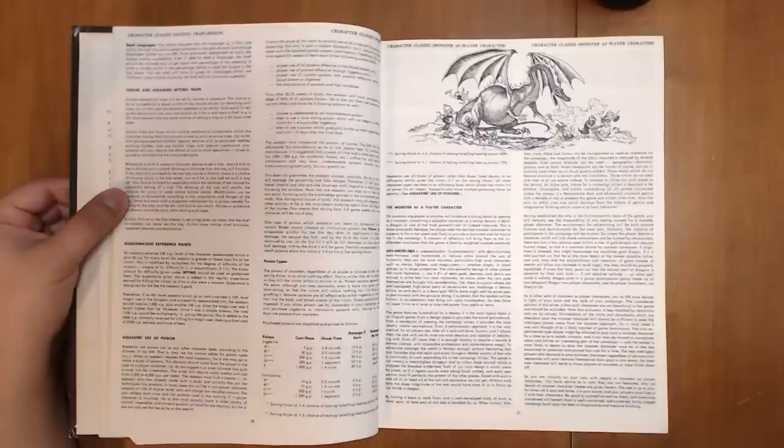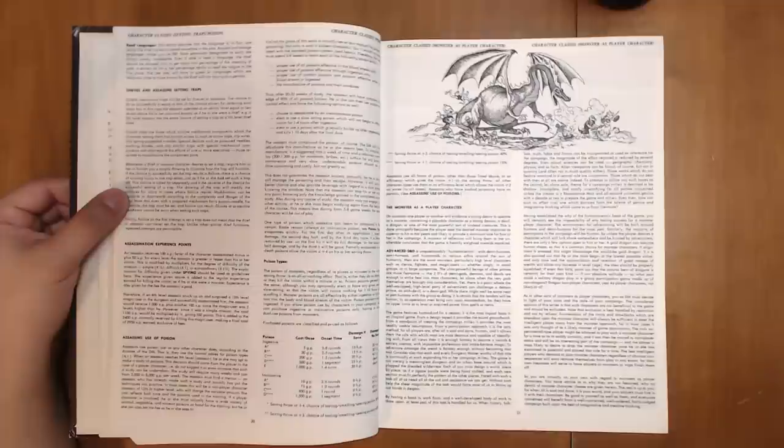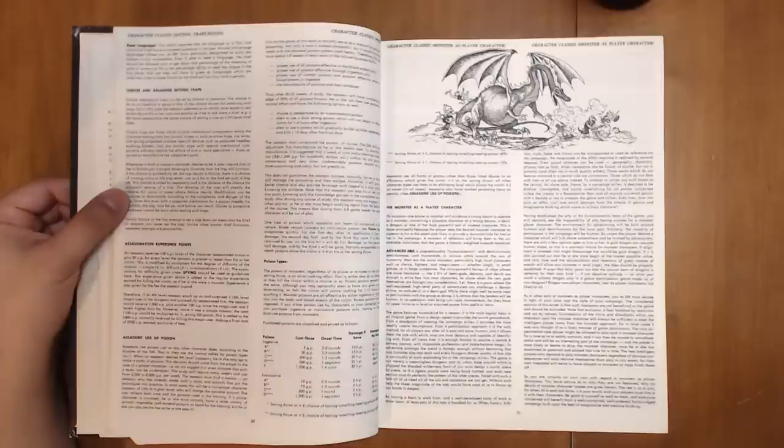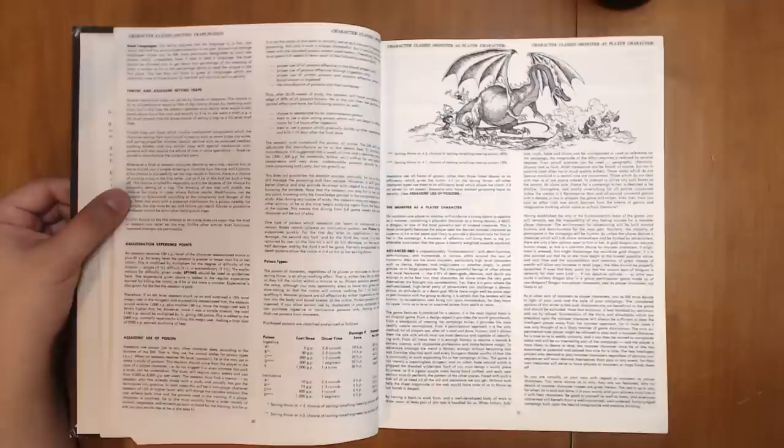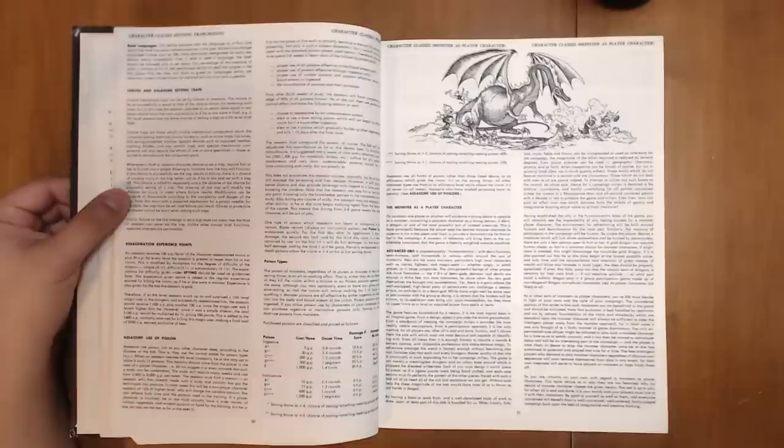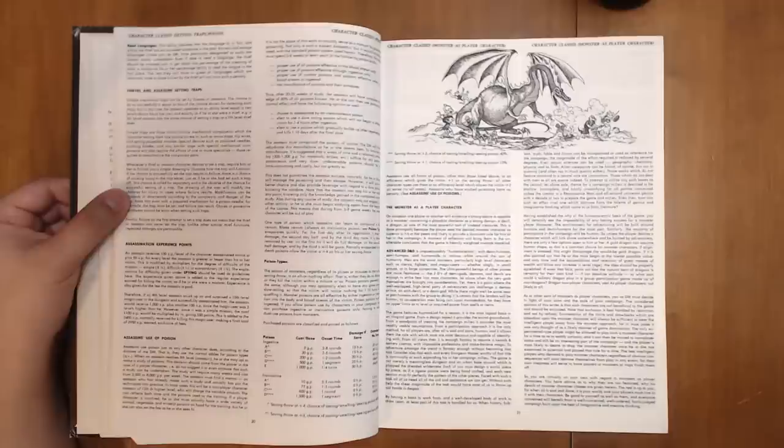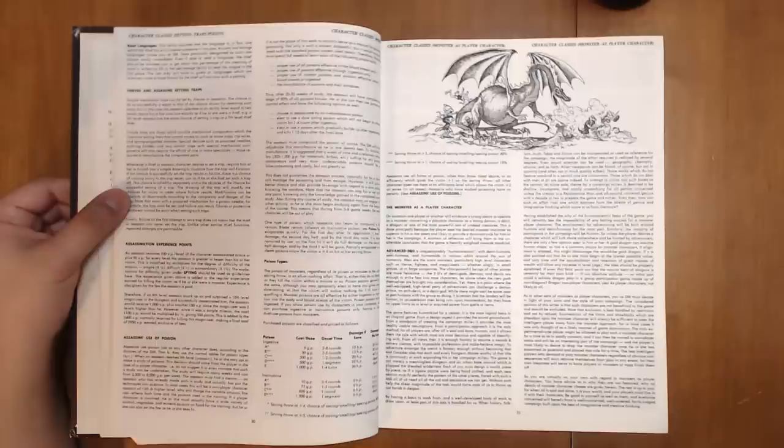The experience given above is added to the regular experience earned for killing the victim, as if he or she were a monster. So it's a little strange that it's talking about how much XP you get for killing monsters, but it doesn't tell you how much that actually is. That's another rule somewhere else in the book. This book has a lot of organization problems where things will be mentioned before they are explained.